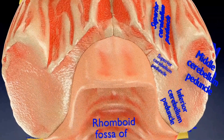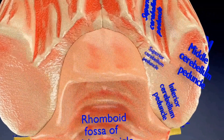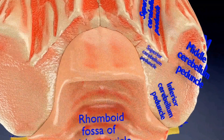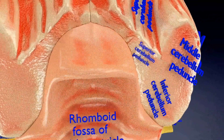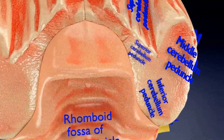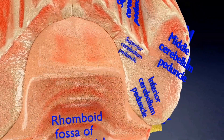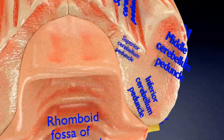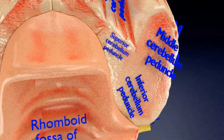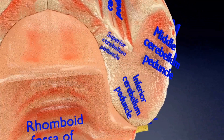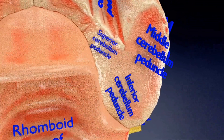Cerebellar peduncles connect the cerebellum to the brainstem. There are three cerebellar peduncles on each side. The superior cerebellar peduncle connects the cerebellum to the midbrain and represents the main output route from the cerebellum.